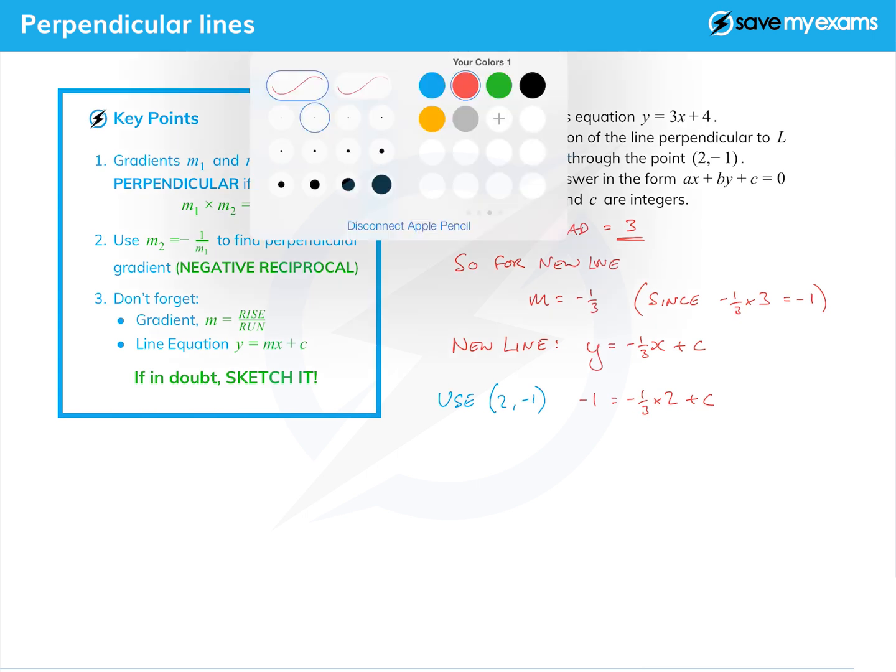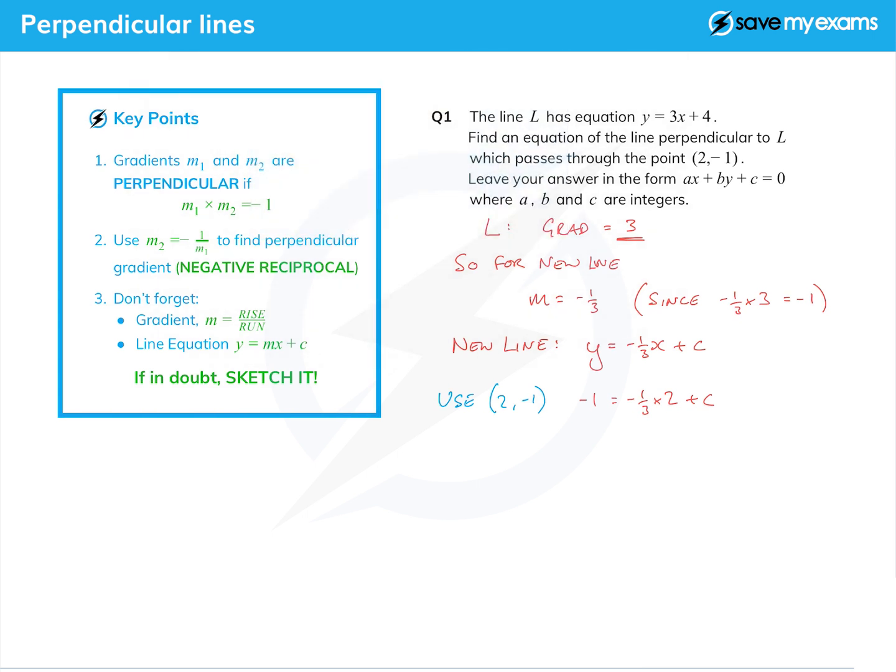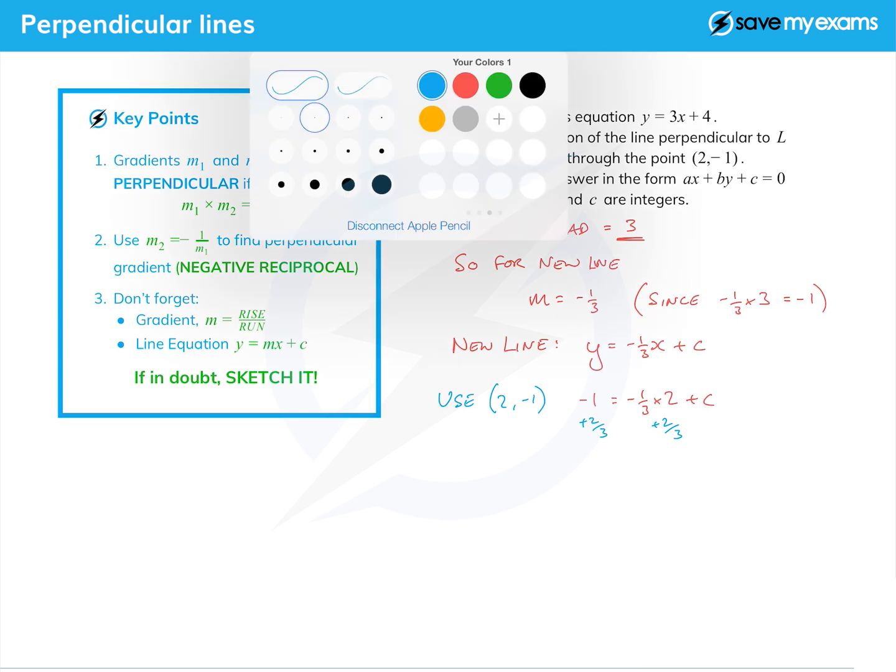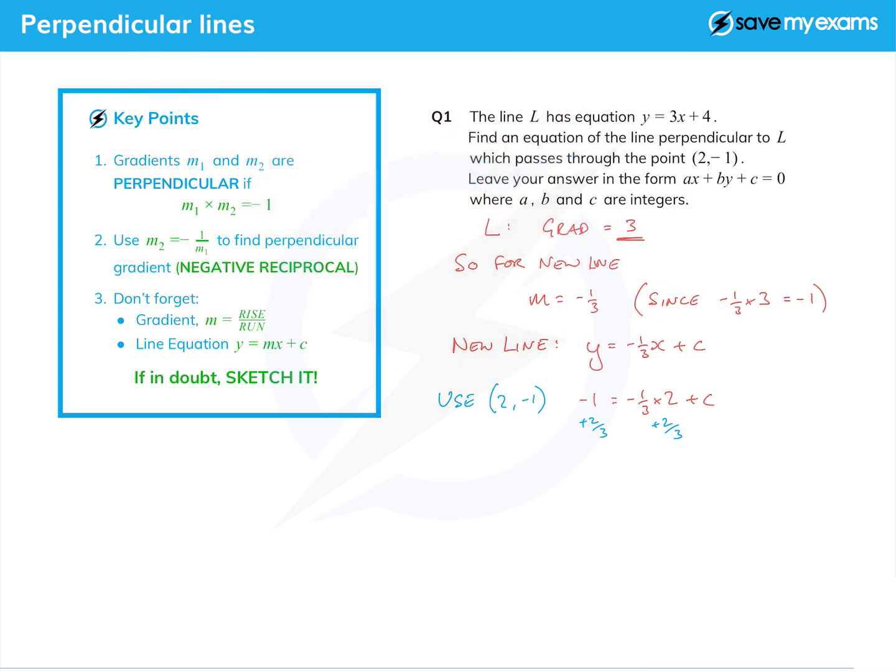Minus a third times 2 is minus 2 thirds, so we add 2 thirds to both sides to get c on its own. Minus 1 plus 2 thirds is minus a third.